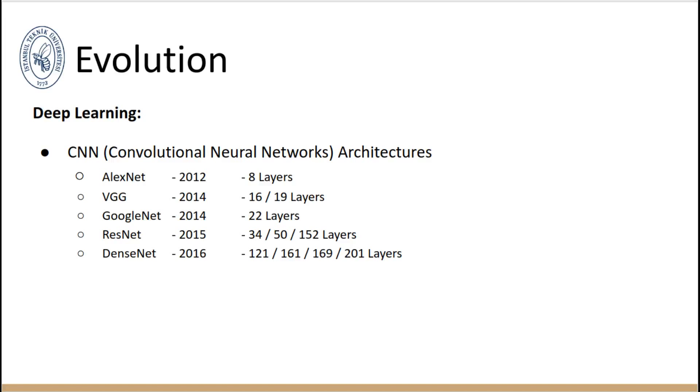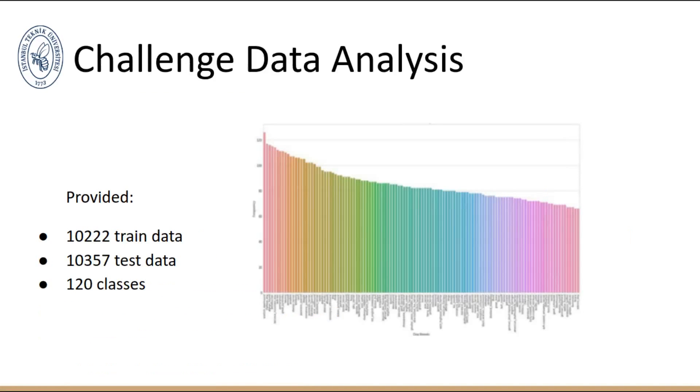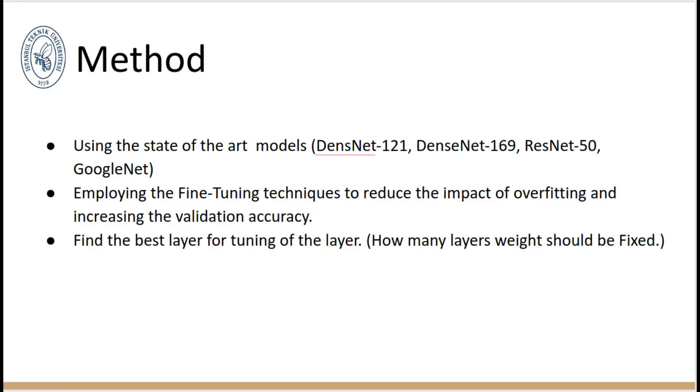As I mentioned, the project is dog breed identification, which asks us to determine the breed of a dog in an image. Here you can see some statistics of our data, and you can see that we have 120 classes.